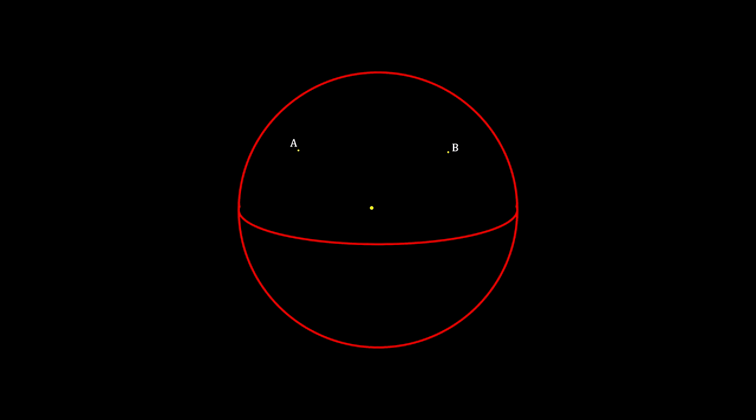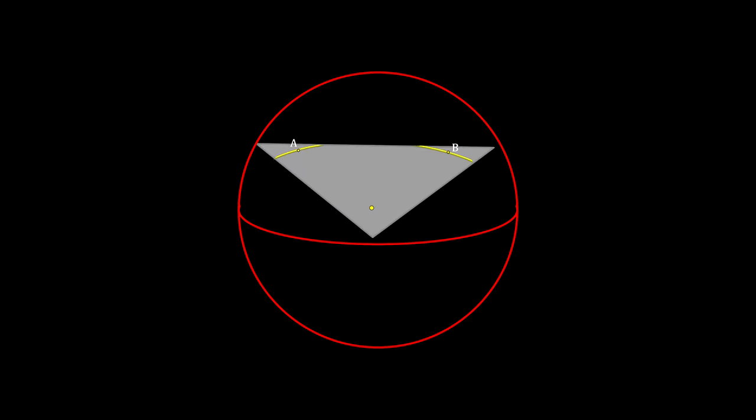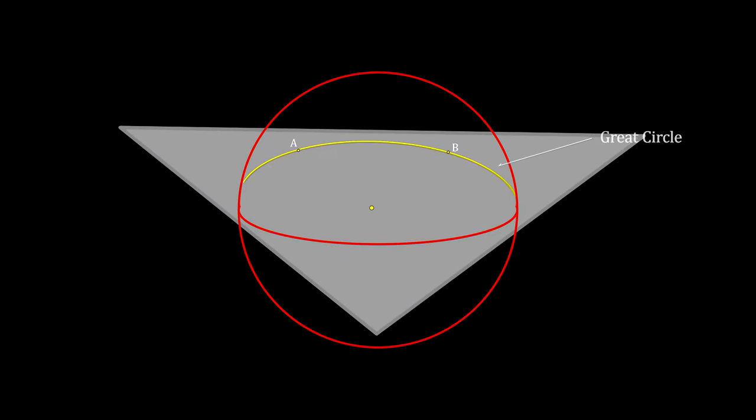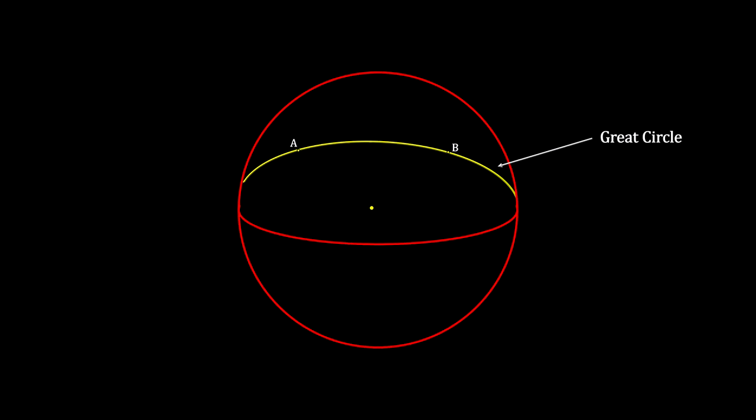Remembering that three points define a plane, here is the best way to find the geodesic between two points on the surface of a sphere. First, draw the triangular plane defined by these two points plus the center of the sphere. Then extend it to intersect the sphere's surface. The intersection creates a line around the sphere called the Great Circle. The portion between the two points is the geodesic, the shortest line on the surface connecting the two points.